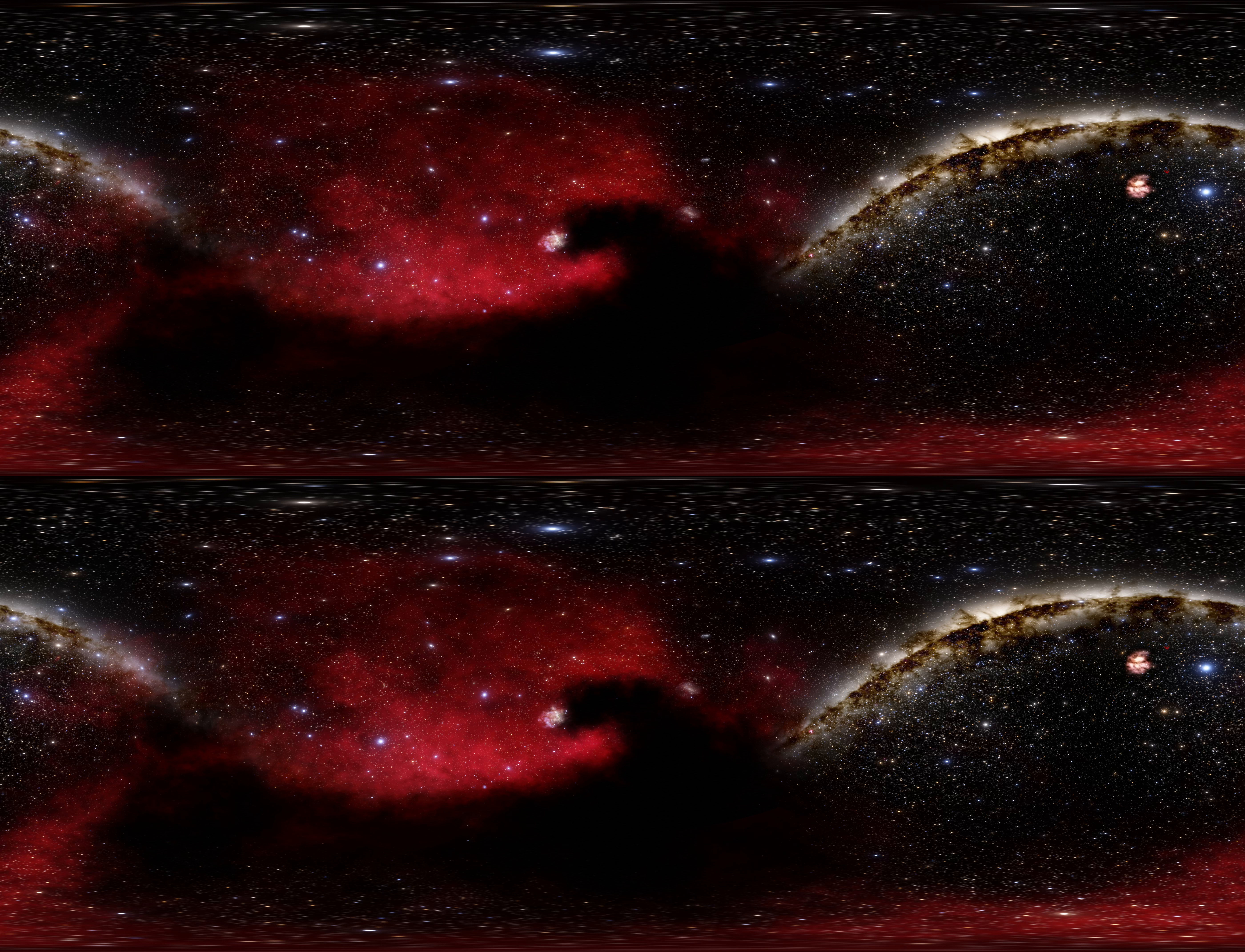Although the Horsehead Nebula is primarily a dark nebula, it is also associated with star-forming regions. Ultraviolet radiation from nearby young stars illuminates and excites the surrounding gas and dust, causing the nebula to glow faintly at infrared wavelengths.